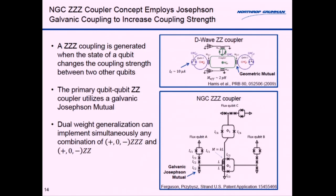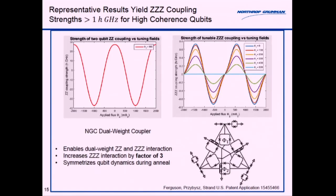Instead of using just geometric coupling, our coupler design uses a galvanic Josephson mutual—not just using a galvanic mutual inductance where the coupler actually shares a trace but having that trace include a Josephson junction. By that type of methodology you can actually increase the interaction strength such that you get a large ZZZ coupling. In simulations the strength of the ZZZ couplings can approach a gigahertz and indeed even go beyond a gigahertz.